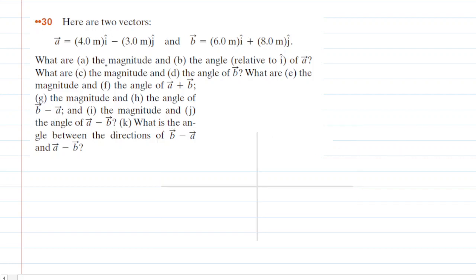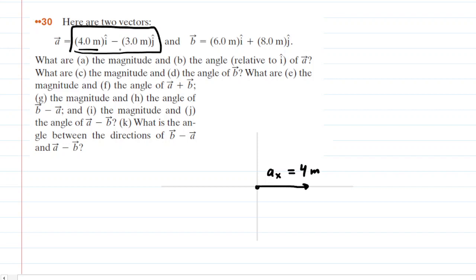In parts A and B we have to find the magnitude and angle of vector A. Vector A is given in unit vector notation. The X component of vector A is positive 4 meters, so we start at the origin and make an X component along the positive X axis — we call this A sub X equal to 4 meters. The Y component is negative 3 meters, so we go down the Y axis in the negative direction; A sub Y is equal to negative 3 meters.